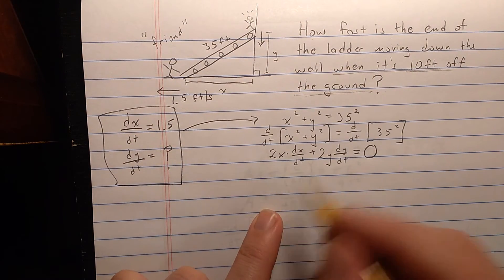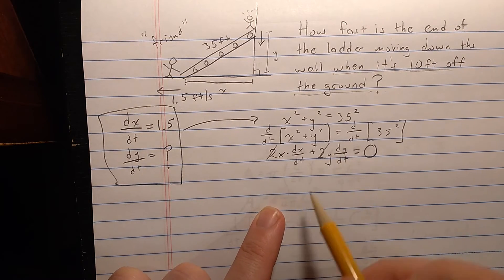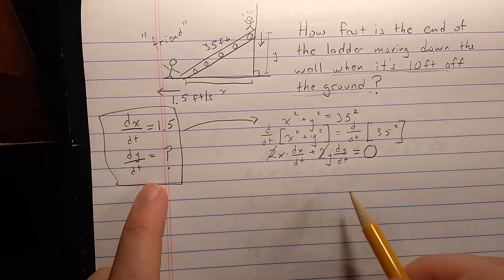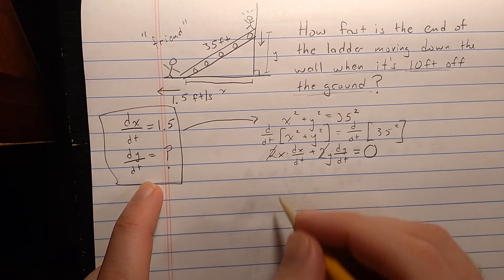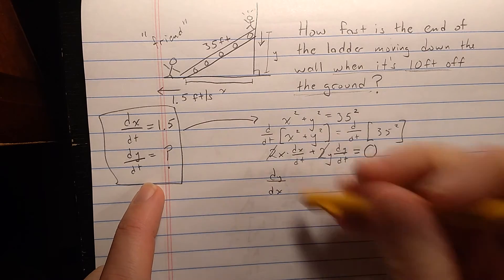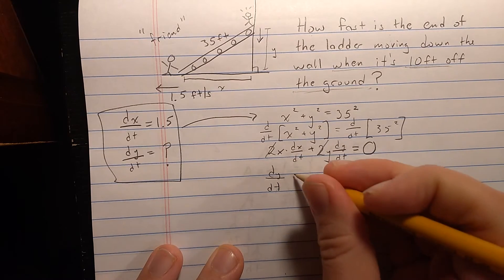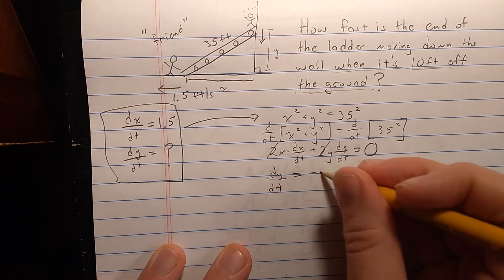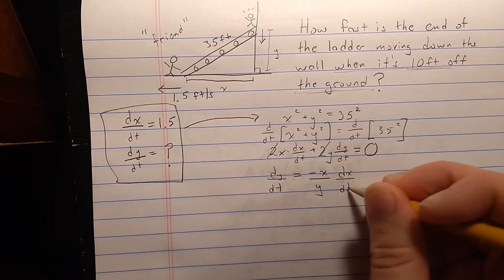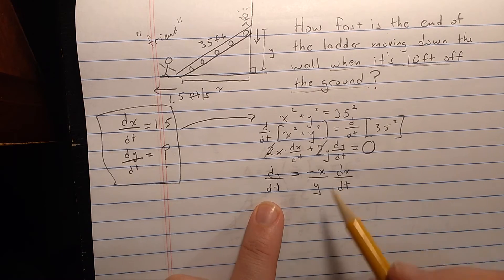To make the relationship simpler I can divide by two, and then solve for the derivative I want — dy/dt. Doing that gives: dy/dt equals minus x over y times dx/dt. There is a relationship between the two derivatives, but it depends on the particular time.